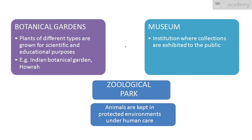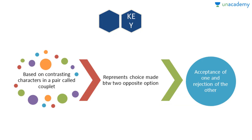Museums are institutions where collections are exhibited to the public. Zoological parks are places where animals are kept in a protected environment under human care. One of the most important and most frequently asked taxonomical aids is the taxonomical key. A taxonomical key is based on contrasting characters in a pair called a couplet — it represents a choice between two opposite options, and you accept one and reject the other, moving forward step by step.